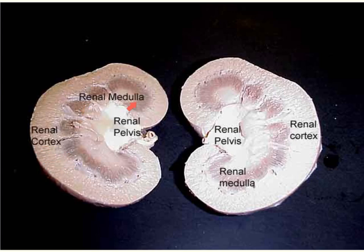The medulla is the area just deep to the cortex. It is segregated into renal pyramids and renal columns. The triangular region is known as the renal pyramid; the tip is called the renal papilla, and it should be striated or striped in appearance because collecting ducts run through them. The renal columns contain the interlobular arteries.